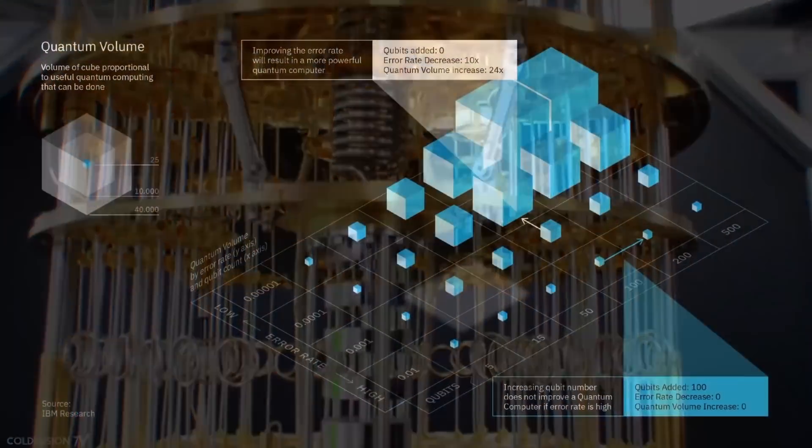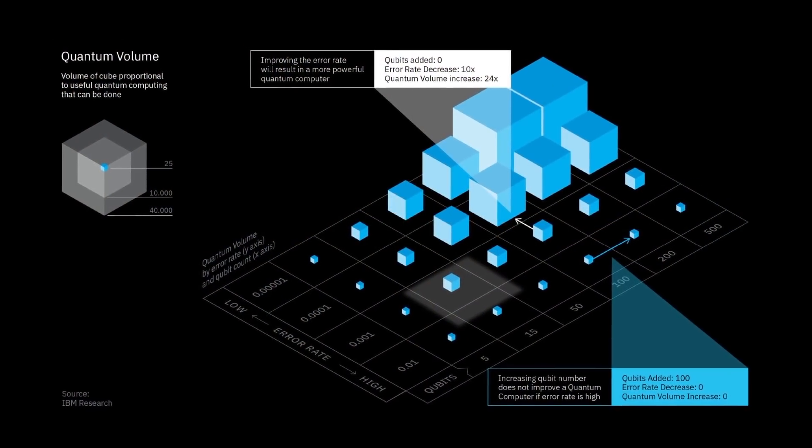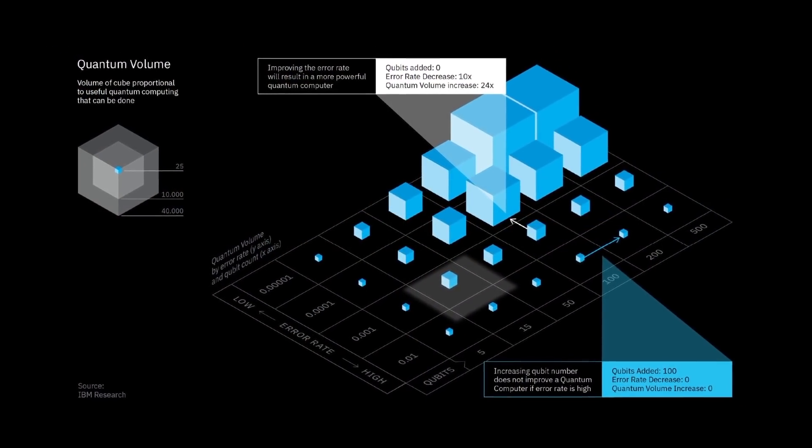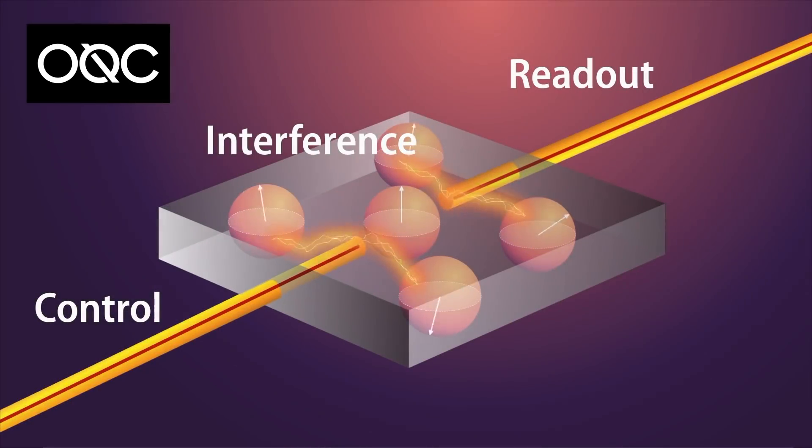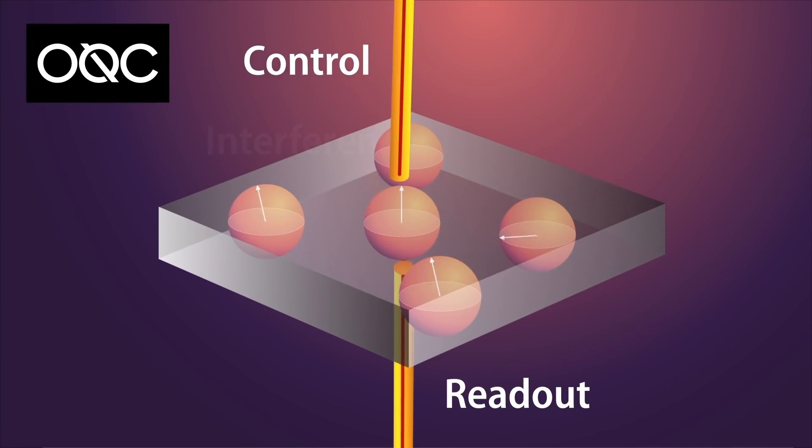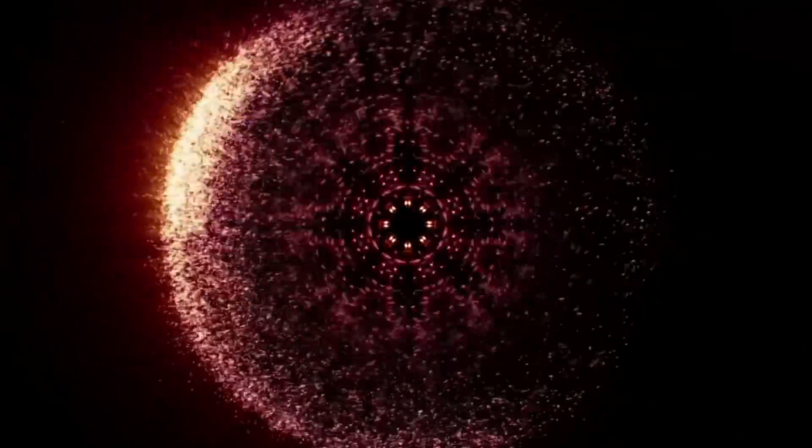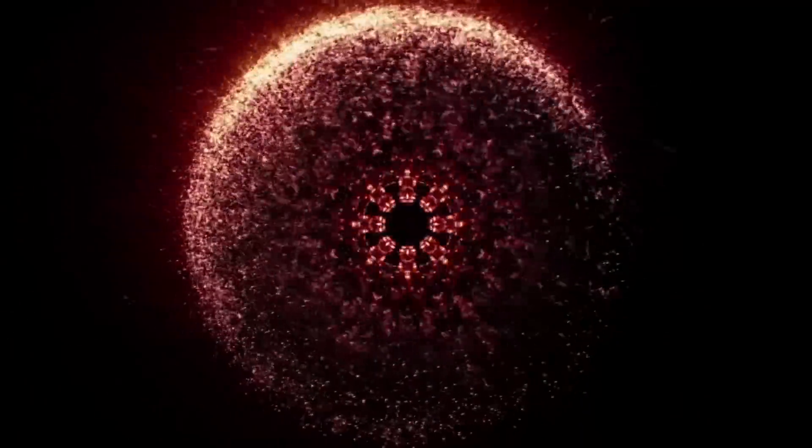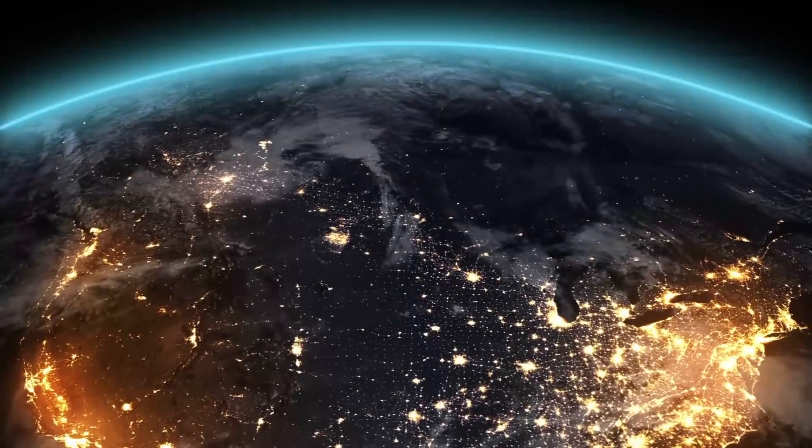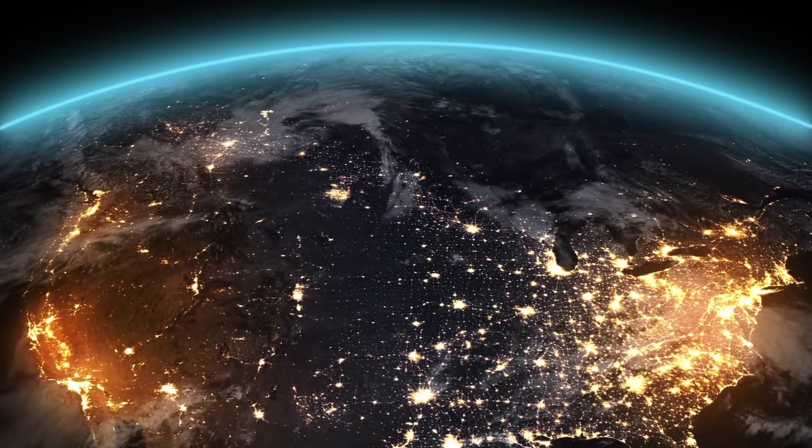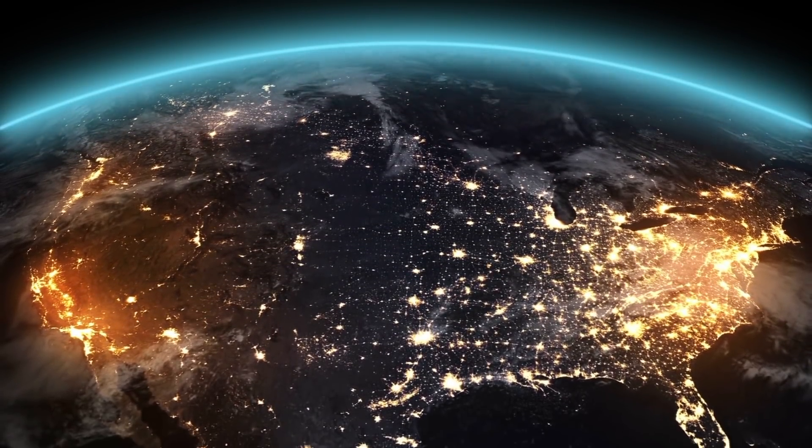A key challenge is to add qubits without creating interference. Oxford Quantum Circuits, which kindly supported this video, saw that a traditional layout wasn't scaling well. So it took the control and readout devices out of plane to reduce crosstalk. The team is taking an open, collaborative approach to spur innovation. Anyone can freely access and program quantum computers online.